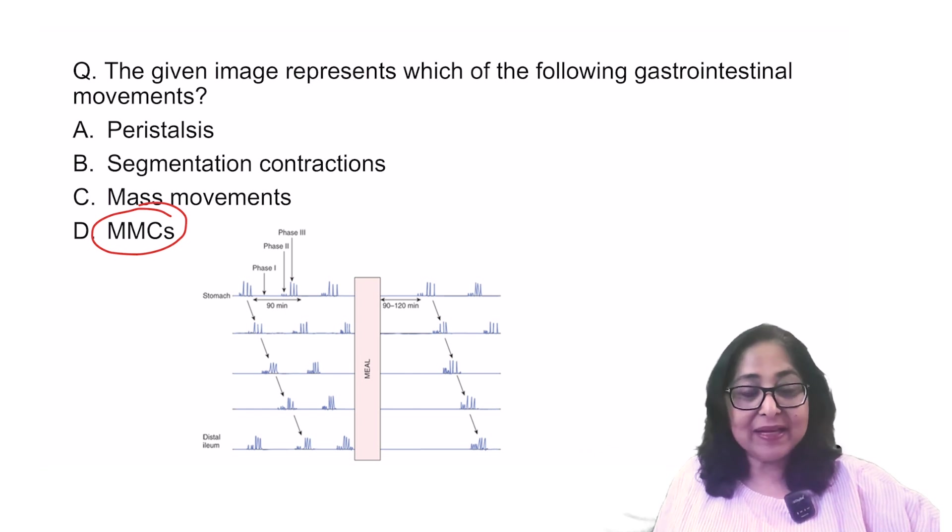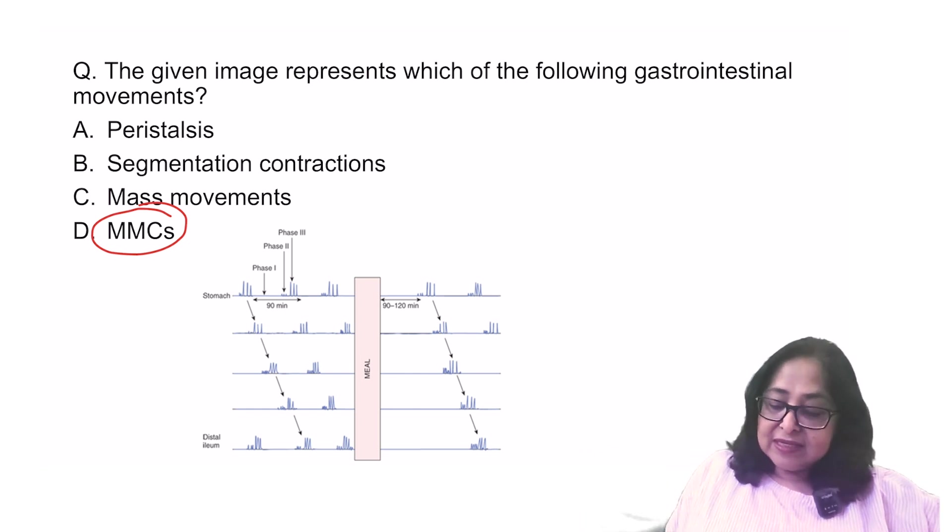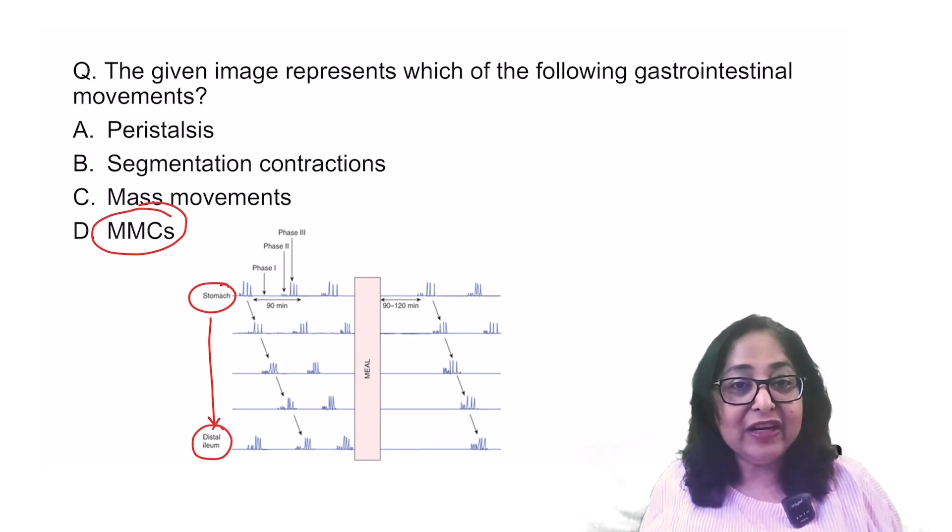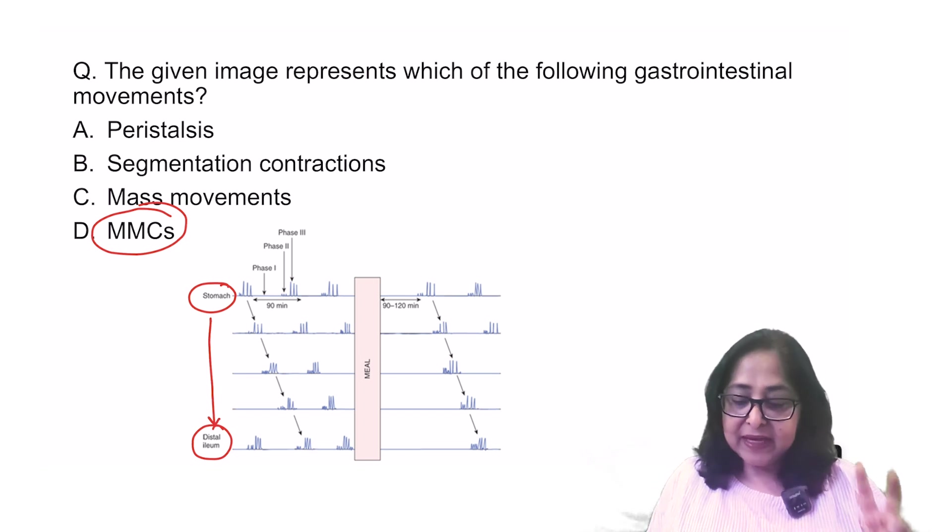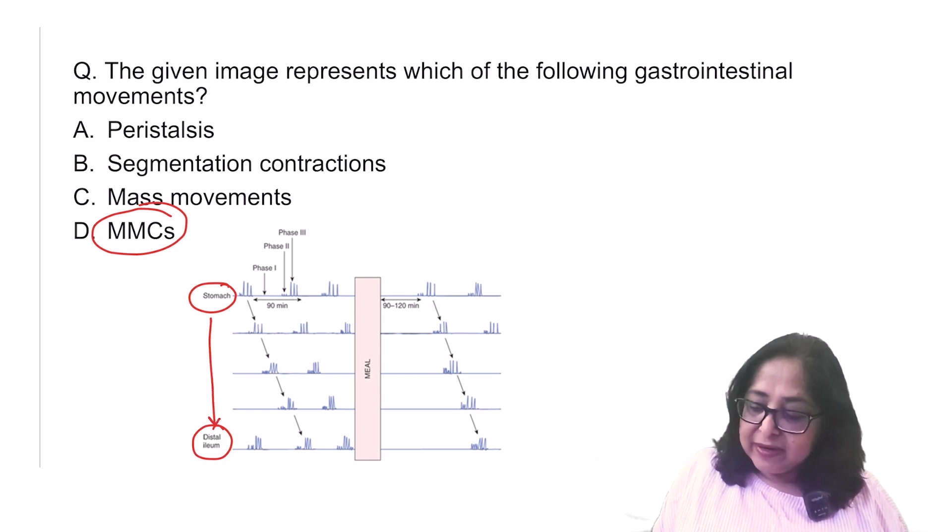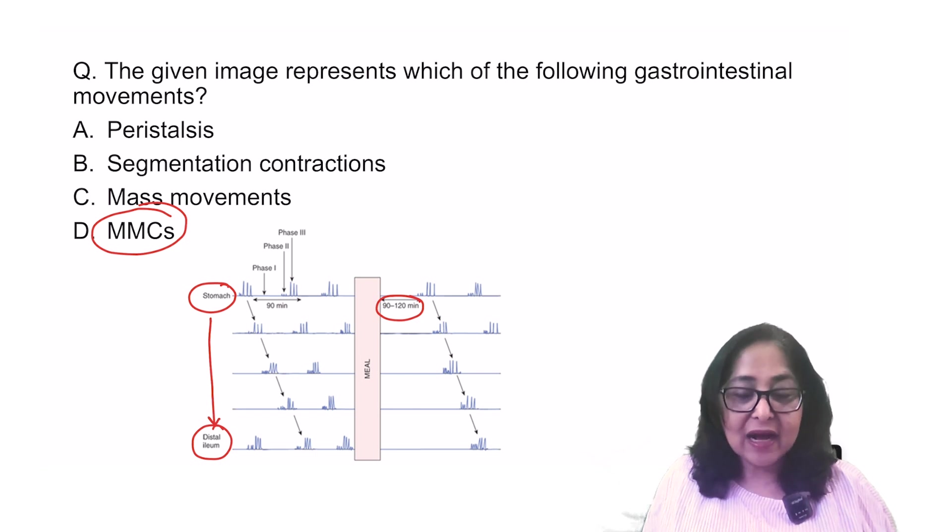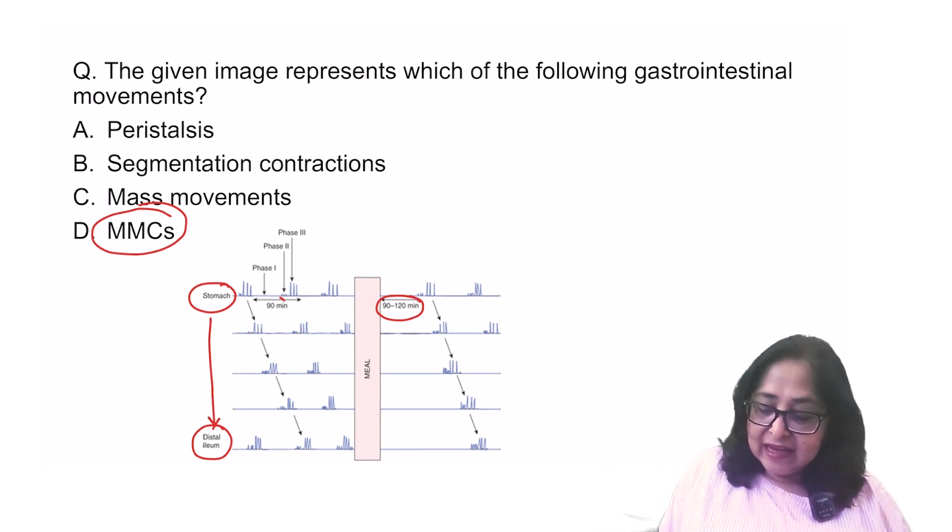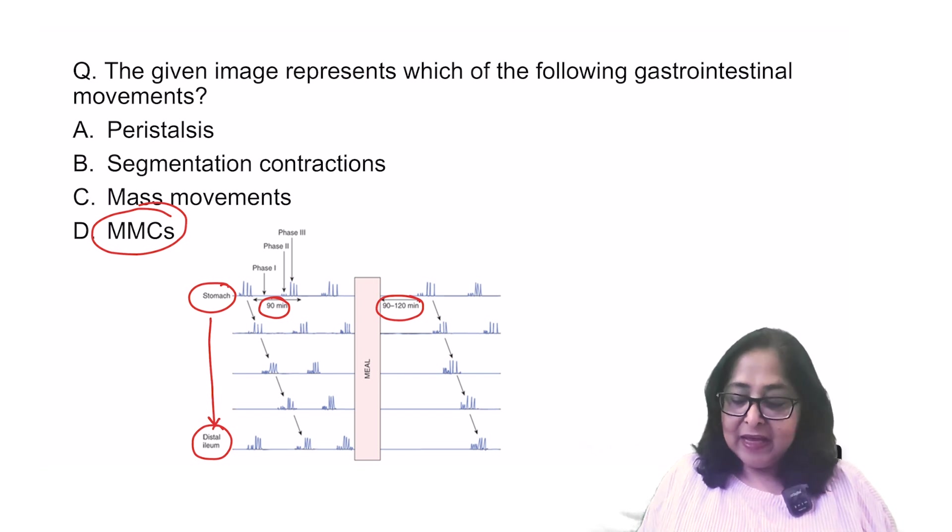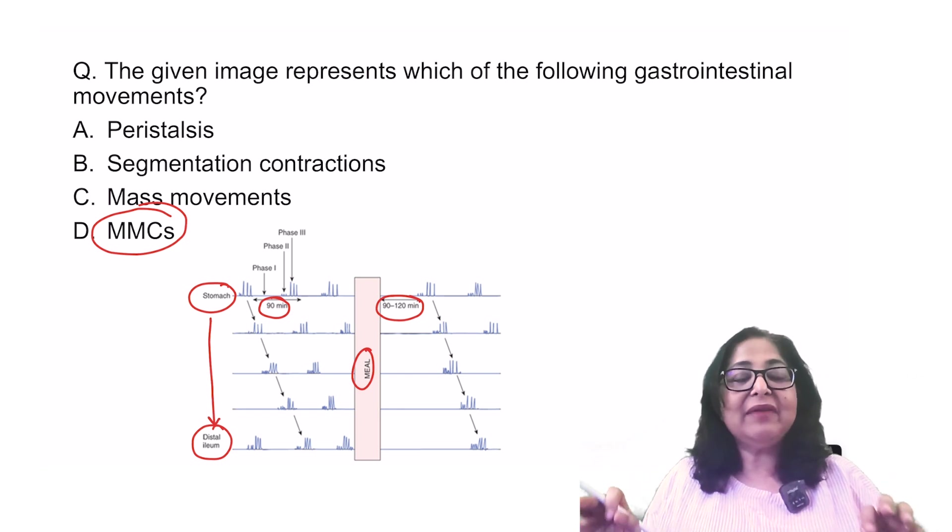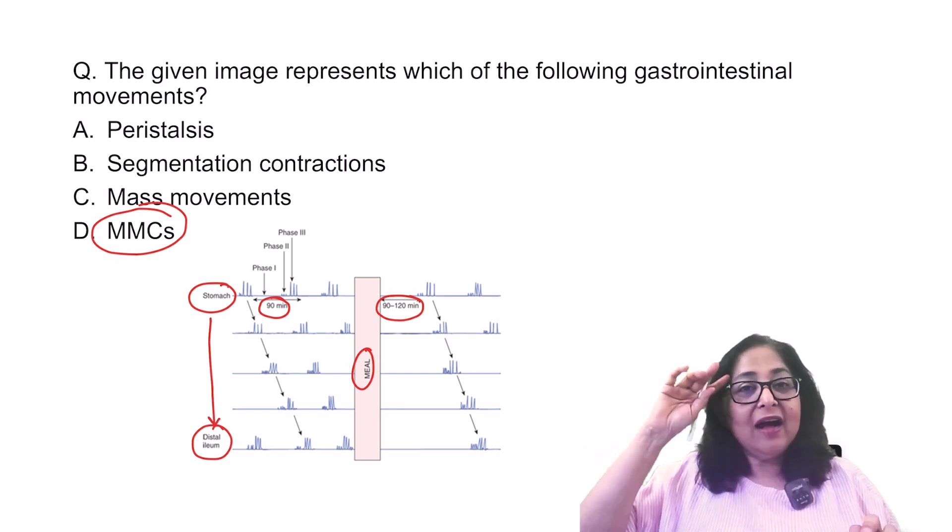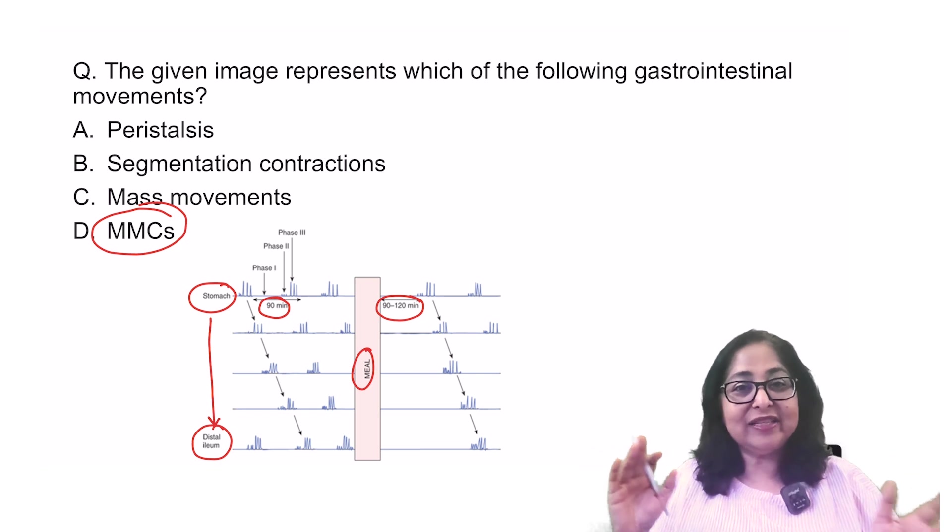Now these are migrating motor complexes. Why do I say so? Firstly, the migrating motor complexes, they start from the stomach and they go right up to the distal ileum. They do not continue into the colon. Second important point, the first migrating motor complex is 90 to 120 minutes after the last meal and then they occur in cycles of 90 minutes. The moment you have your food, these movements are abolished.